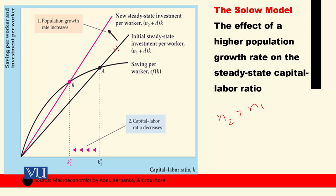Why does this happen? When the economy shifts from A to B, the value of output per worker at point B is lower. Using the production function, the output per worker at the new equilibrium B is reduced compared to point A.